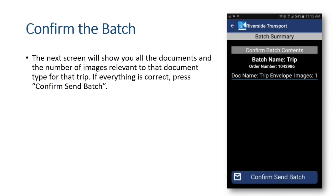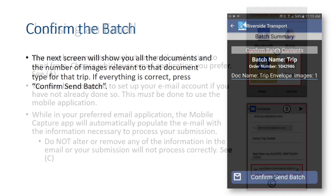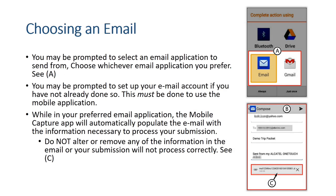The next screen will show you all the documents and number of images relevant to that document type for that TRIP. If everything is correct, confirm to send the batch. You may be prompted to select an email application to send from — choose whichever email application you prefer.